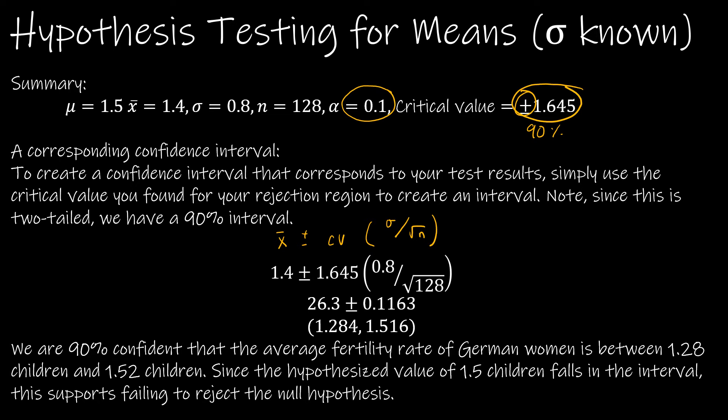Our interval says 1.284 to 1.516. When you talk about an interval, don't just say, yes, this supports our decision because what? We have to say, what does this interval mean? The interval tells us we're 90% confident the average fertility rate of women is between 1.28 children and 1.52 children. So always talk about the two values. Now, does it support my conclusion? Well, remember, I'm testing 1.5 and 1.5 is in there. So since the hypothesized value of 1.5 falls in the interval, this supports failing to reject the null hypothesis.